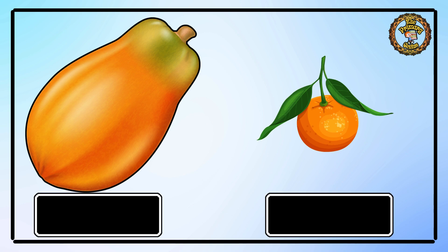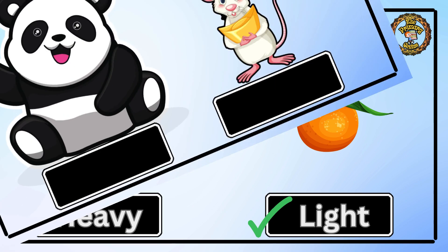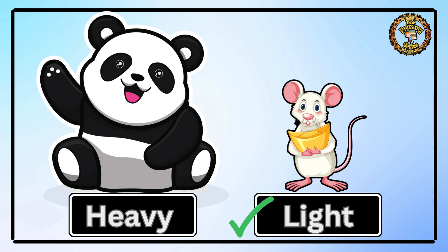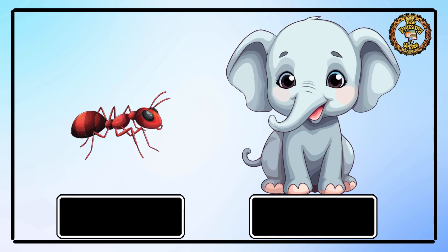Then we have a papaya and a tangy orange. Which one is light? Yes, the tangy orange is light and the papaya is heavy. Look, a cute panda and a mouse — tell me which one is light? Yes, the mouse is lighter than the panda. Then we have an ant and an elephant. Tell me which one is heavy? Yes, the elephant is heavier than the ant.